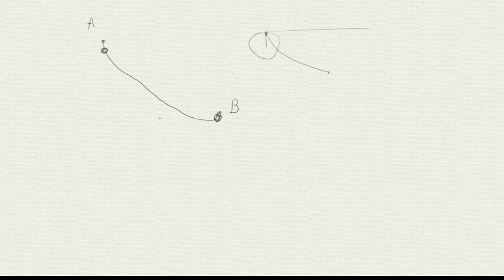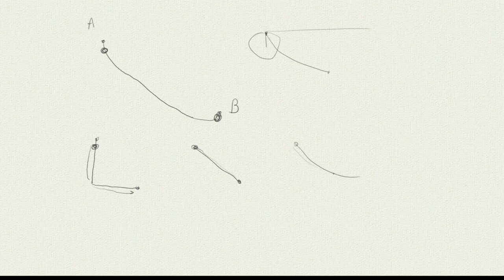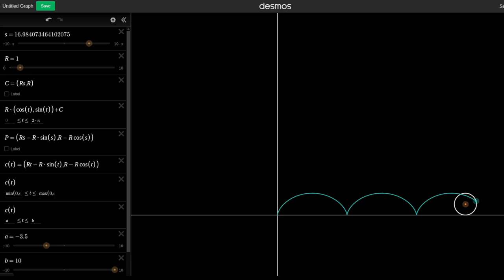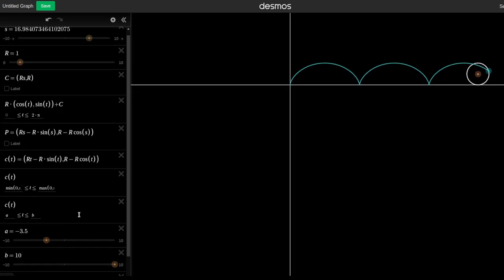Why is this problem non-trivial? If we take a path of a certain form where the bead gains a lot of velocity early on, it can get stuck later. And it can also be easily seen that a straight line is suboptimal - if you give it some slight curvature, the bead can gain more acceleration. The solution with calculus of variations shows that the optimal curve is the arc of the cycloid.